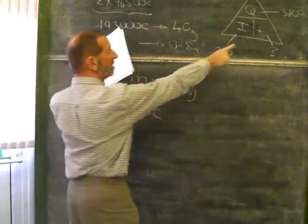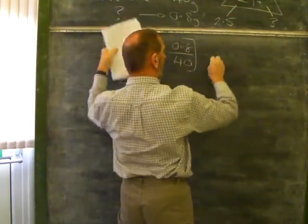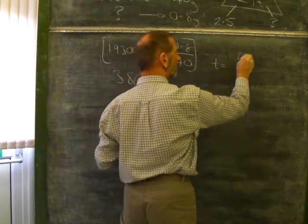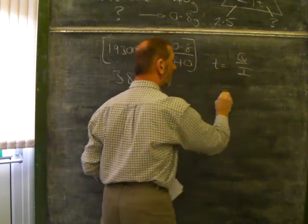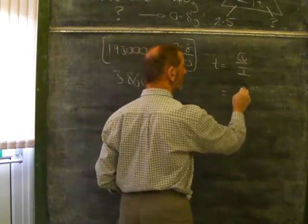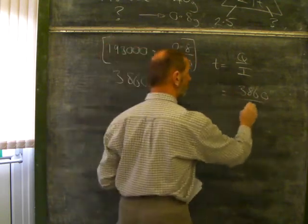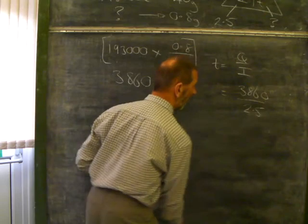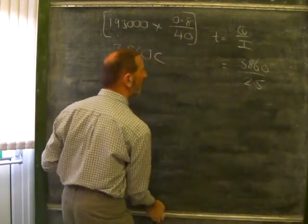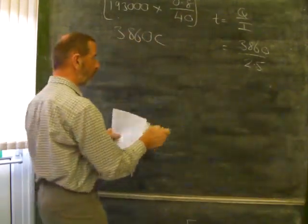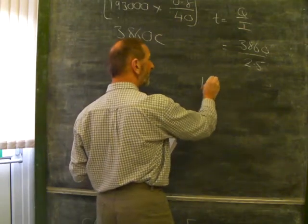So how long would it take to do this? We can see that T equals Q over I. The Q, the value for Q is 3860. The value for the current is 2.5. If we work out the sum, this gives us a number which is 1544.